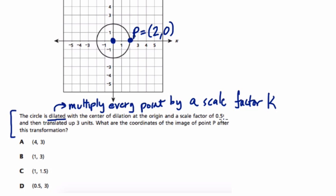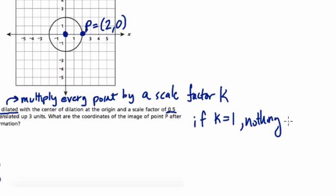Here, the scale factor is 0.5. If the scale factor, so if K equals 1, nothing changes. And that's, isn't that cool? Just like when you multiply by 1, nothing changes. With dilations, if you multiply by 1, the shape stays the same. If K is bigger than 1, the shape enlarges.